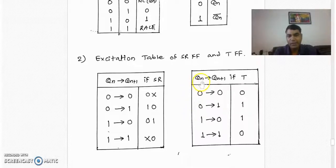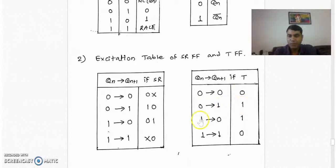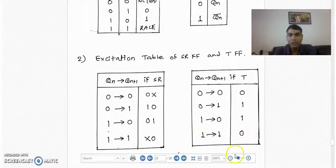In the excitation table of T flip-flop, there is a transition from present state Qn to next state Qn+1 with corresponding T values. For 0→0 transition, T is 0. For 0→1, T is 1. For 1→0, T is 1. For 1→1, T is 0.